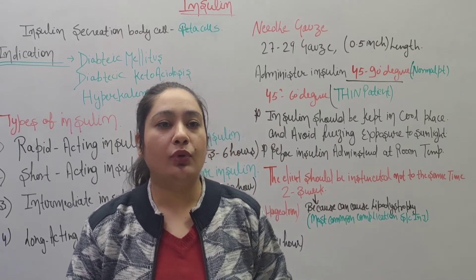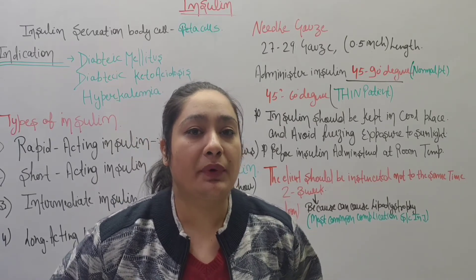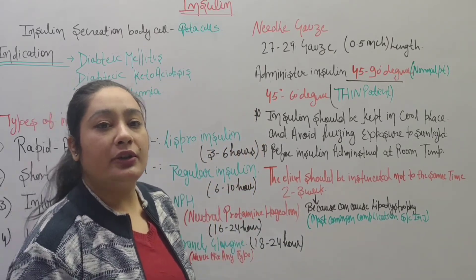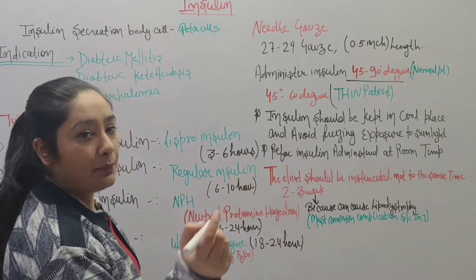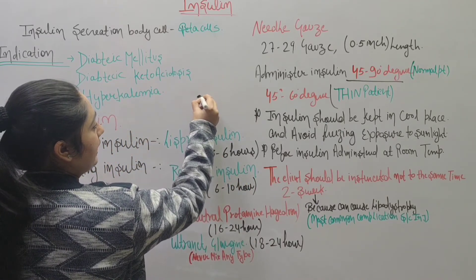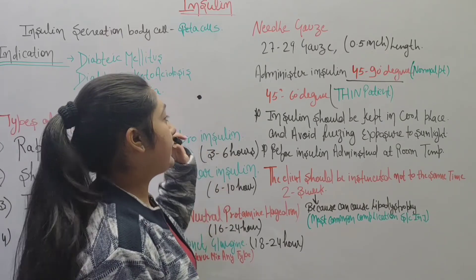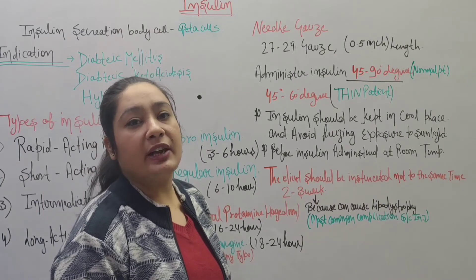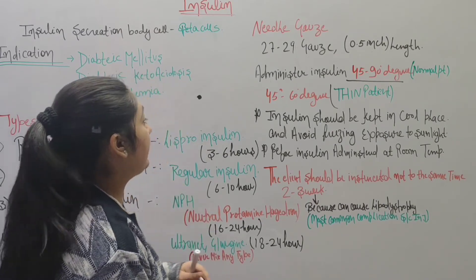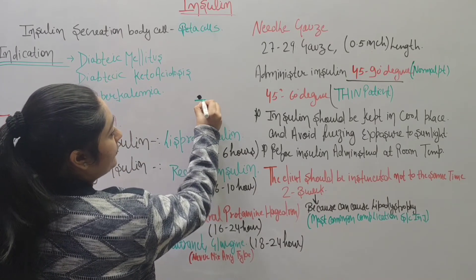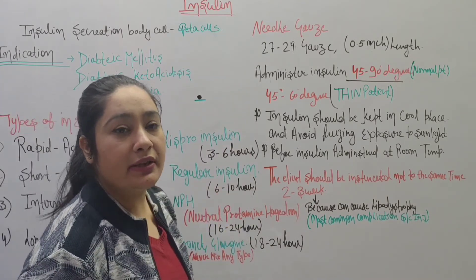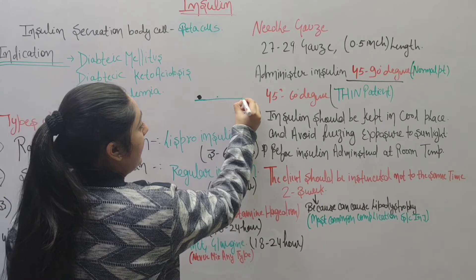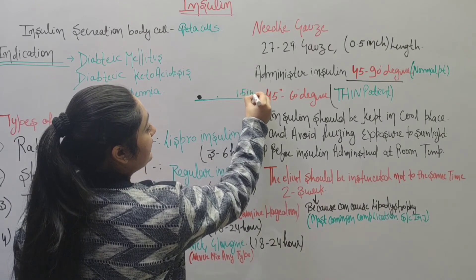There was a question in 2019 regarding injection site rotation. When rotating within an anatomical area, the distance between injection sites should be 1.5 inches. This means each new injection should be placed 1.5 inches away from the previous site within the same anatomical area.